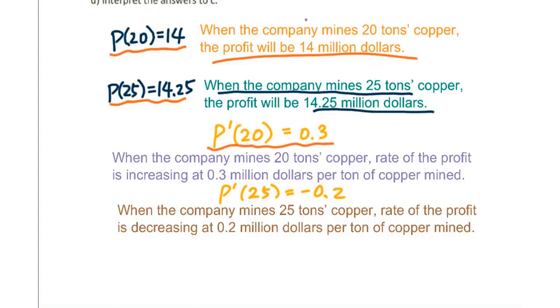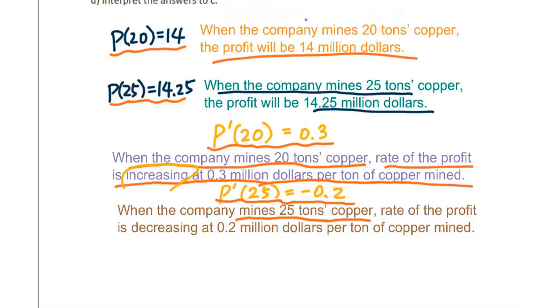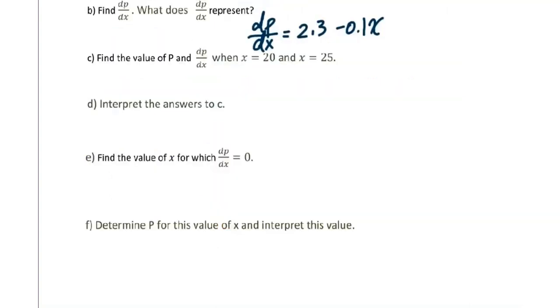For P'(20) equals 0.3, remember P prime means rate of change. So when the company mines 20 tons copper, rate of the profit is increasing at 0.3 million dollars per ton of copper mined. Since this 0.3 is positive, that's why it's increasing. For P'(25) equals negative 0.2, when the company mines 25 tons copper, the rate of the profit is decreasing at 0.2 million dollars per ton of copper mined.